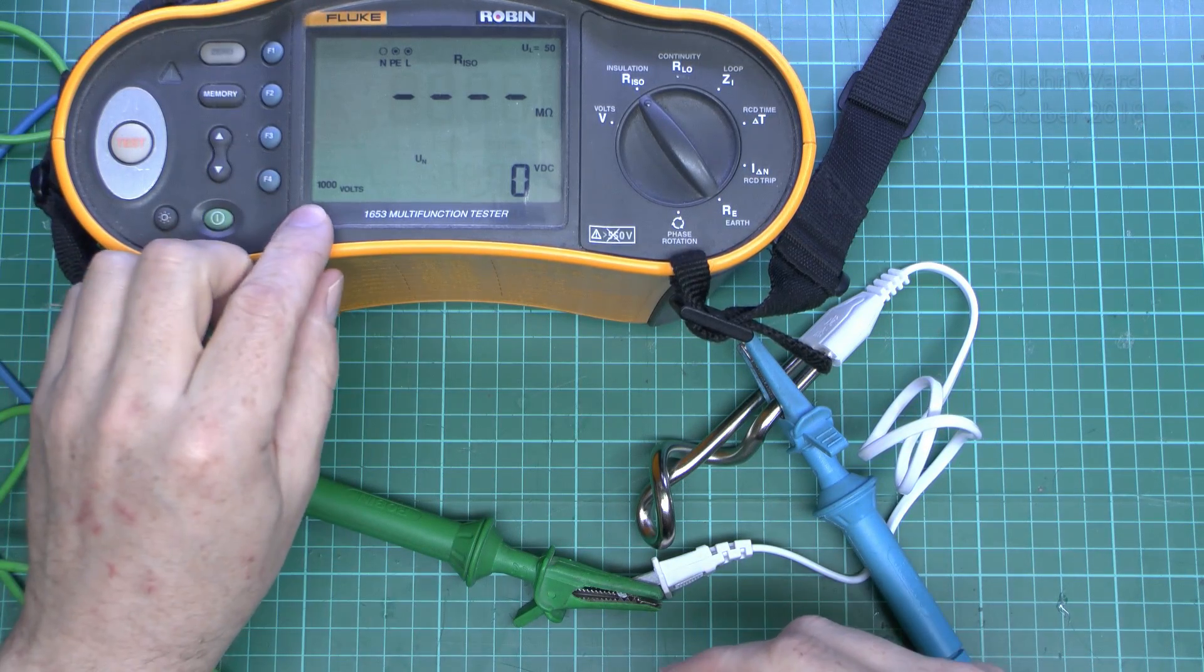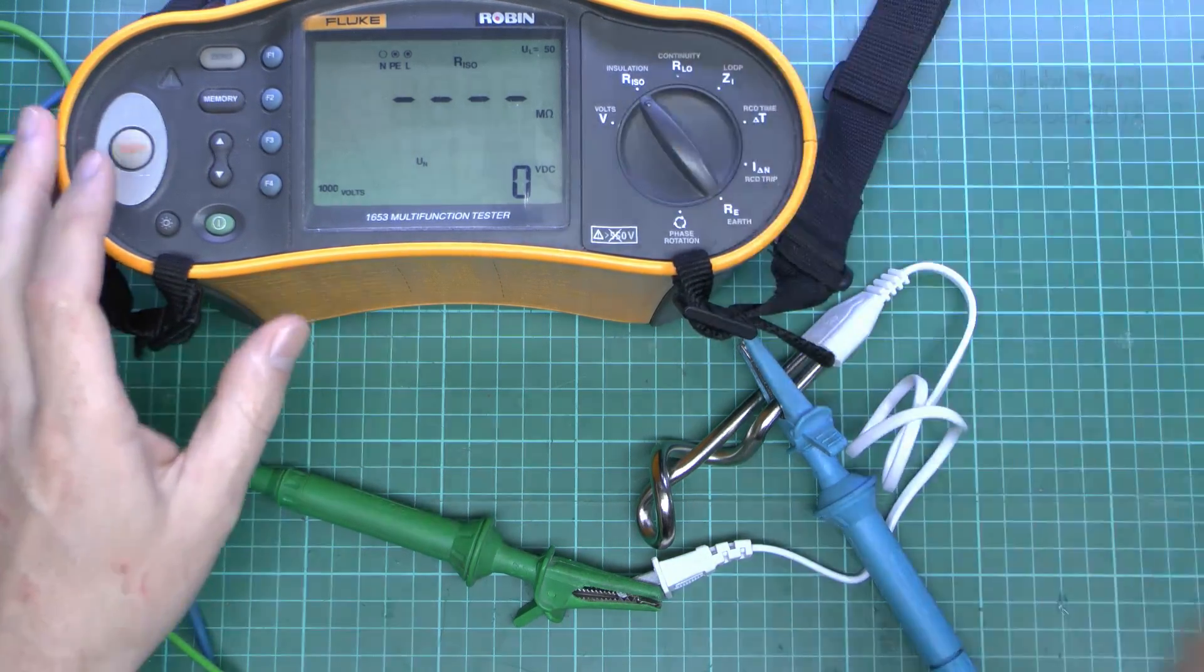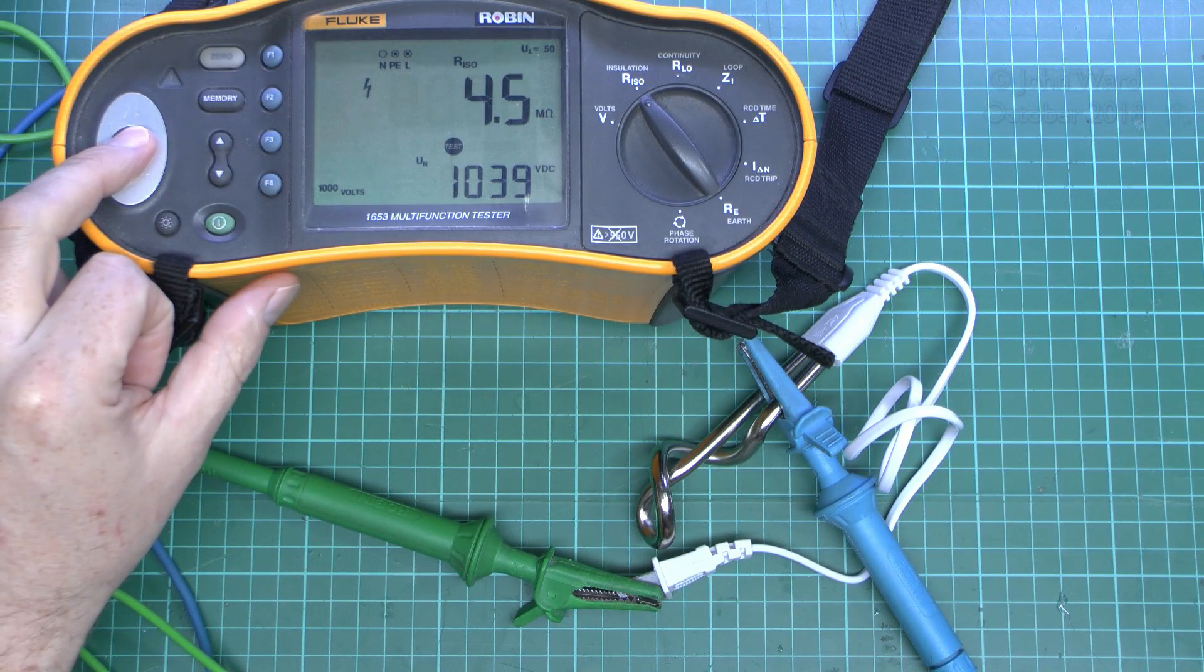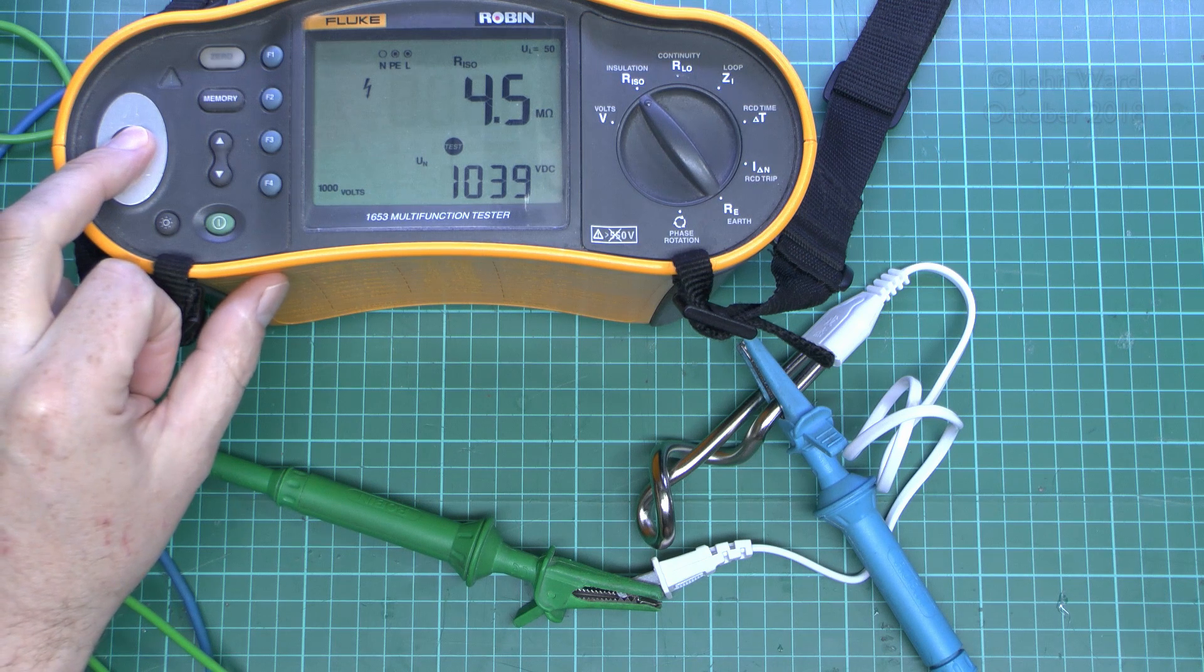We're going to use the 1000 volt range here, because it's what we can use. So let's see what we get. 4.5 megaohms, that's a pass, but it's pretty poor. You would expect in the many tens at least.